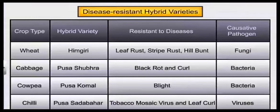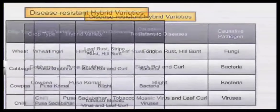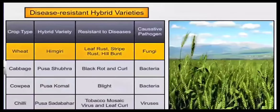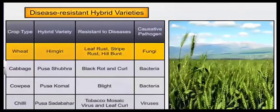This table is very important. It is given in your book. It shows various types of disease-resistant hybrid varieties.